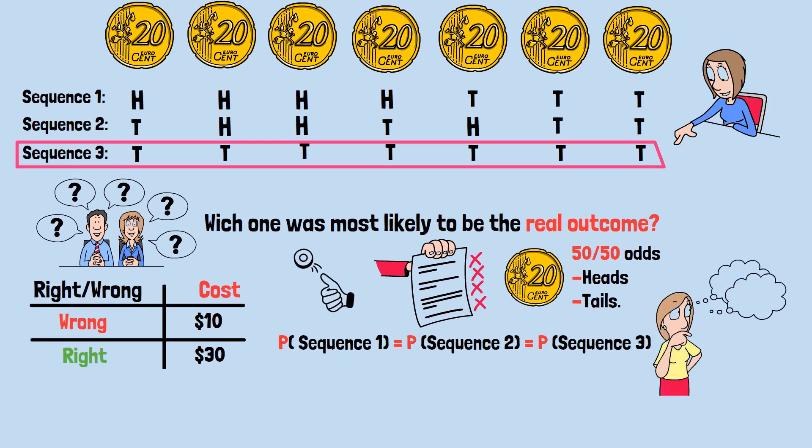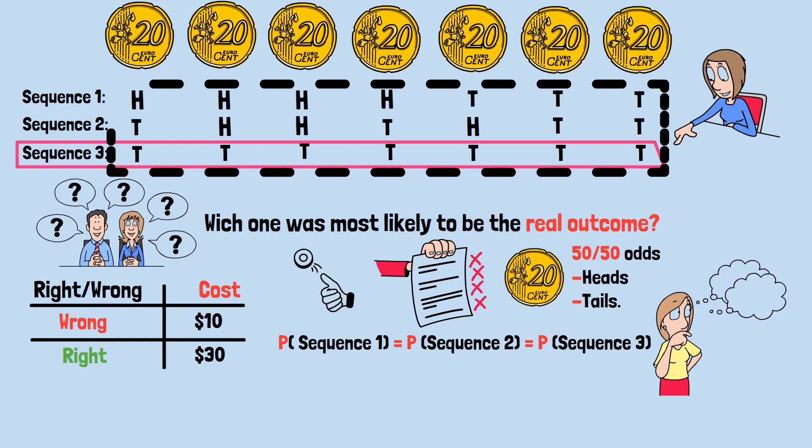Since we're anchored into thinking there's typically an alternating mix of heads and tails in a sequence of seven coin tosses, we wrongly believe it's actually more likely. We're wrong.